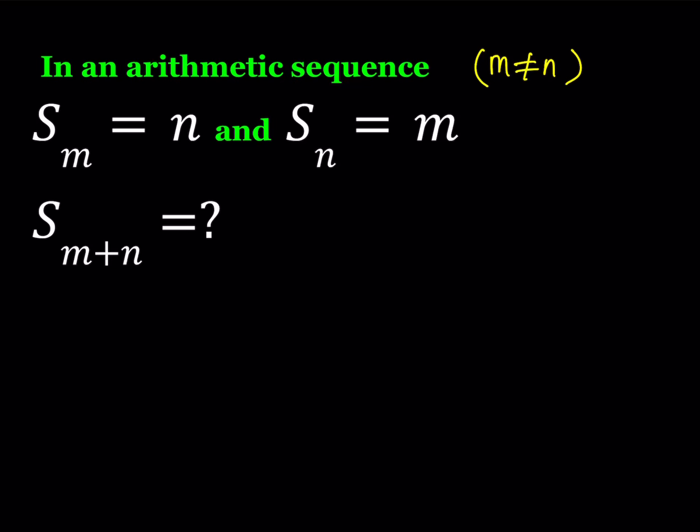Hello everyone. In this video we're going to be working with an arithmetic sequence whose partial sums are given: S sub M equals N, and S sub N equals M. M and N are different values — obviously if they are the same then this will always be true. We're supposed to find S sub M plus N.